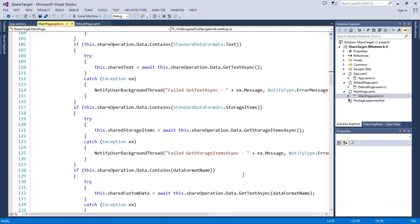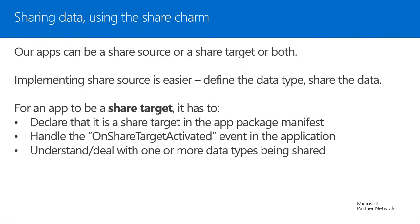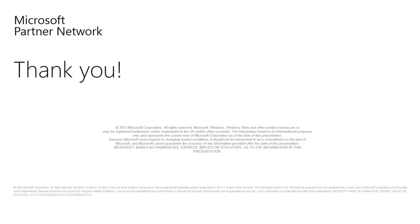Implementing share target is more involved than share source, but if your application is a mail client, Twitter client, or similar, you'd want data shared into your app, not just from it. To recap three key points: one, declare your application as a share target; two, handle the OnShareTargetActivated event; and three, deal with the incoming data. Thank you for your time — hope you enjoyed today's presentation and have a nice day.